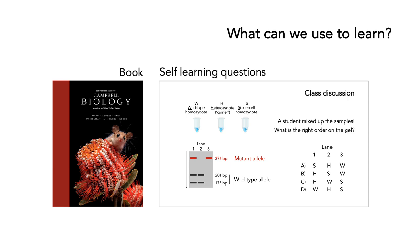Throughout this course, we're going to be using a couple of resources. The first is Campbell's Biology, a textbook for undergraduate students. If you don't have it, it doesn't matter — you're going to be told everything you need in this series. We're also going to have a number of self-learning questions. When these come up, the best thing to do is stop the talk, see if you can answer it, and then move on. These are a great way of making sure you've learned all the material presented up to that point.